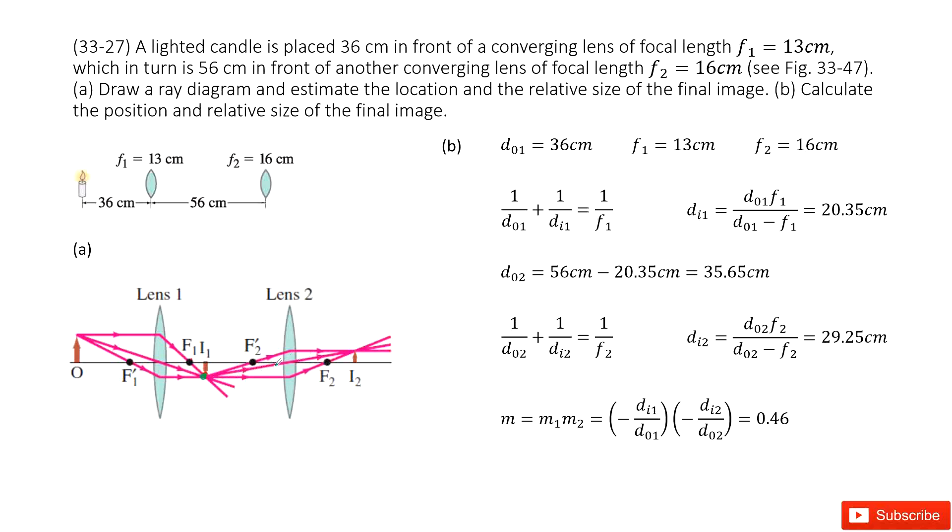And as the light goes through the center of lens 2, this line will not change. So the intersection comes to there. This is the image for lens 2. We call it I2. Then we are done.